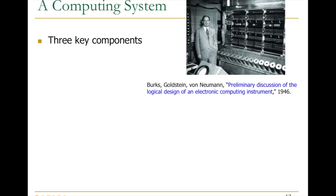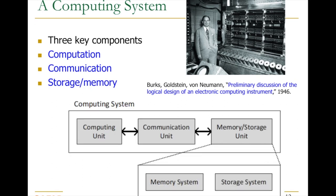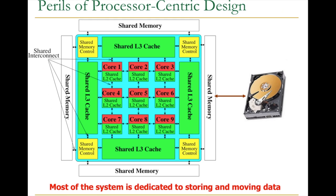When you look at a computing system, it consists of three key components: compute, communicate, and store. We've heavily optimized the computing unit, and kind of ignored the rest — that's part of why we have a not-so-intelligent architecture today. This picture I drew in 2008 still holds true. If you look at a system designed today, most of it is really dedicated to storing and moving data. We call this a computing device, but more than 90% of the hardware area and most of the cost is dedicated to storing and moving data. So it's worth thinking about: we call it a computer, but most of what it's doing is storing and moving data.